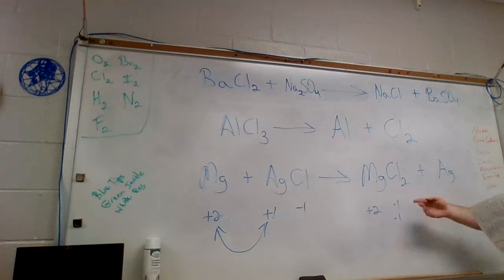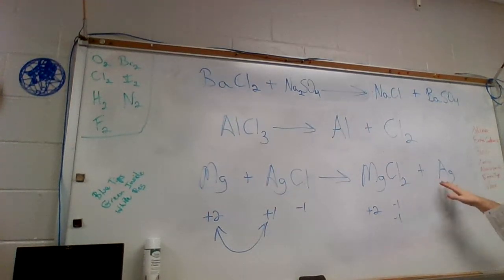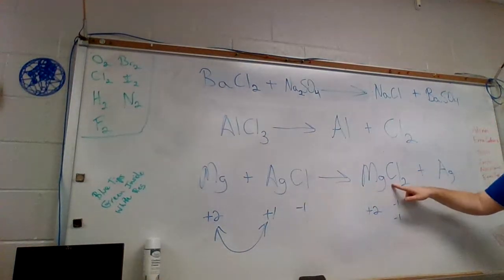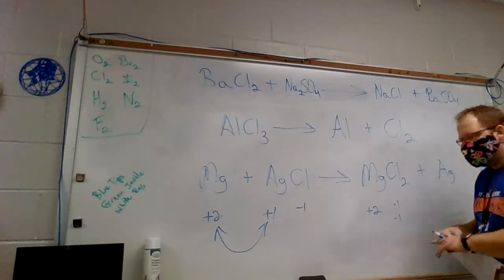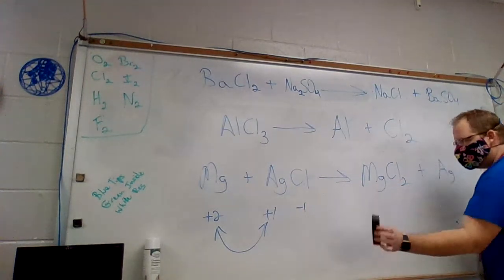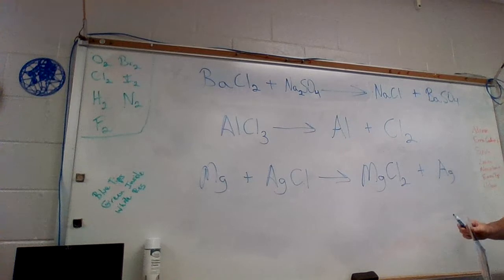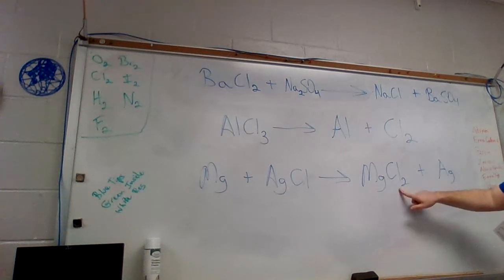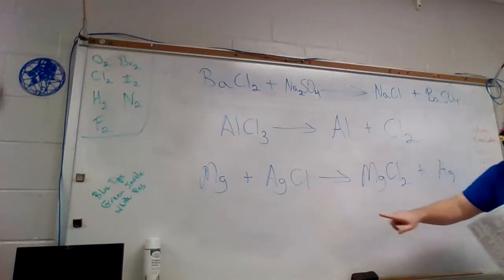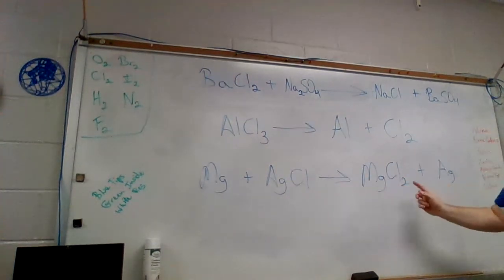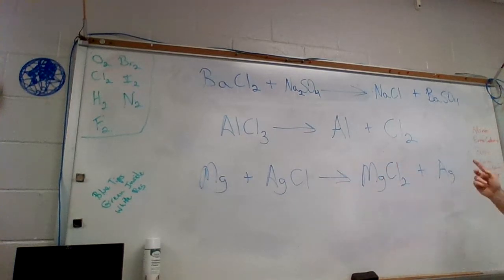Now I have my full equation: Mg + AgCl → MgCl2 + Ag. I can erase the charges since I don't need them anymore. Now I just need to balance the equation. There are two chlorines on the right and only one on the left, so that's what's not balanced. Go through, add some coefficients, balance out your chlorines and your silvers, and that will be your complete answer.